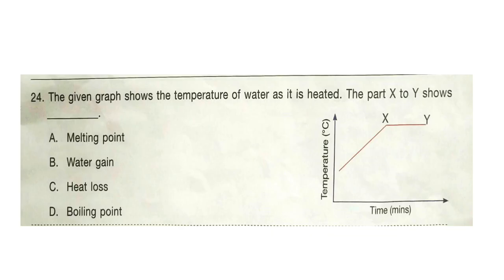Question 24: The given graph shows the temperature of water as it is heated. The part X to Y shows dash. The correct answer is option D — Boiling point. The graph shows that the temperature of water is not increasing with time from period X to Y, which shows that water has attained its boiling point, i.e. 100 degrees Celsius. On reaching boiling point, the temperature of water does not increase further and water converts into water vapor.